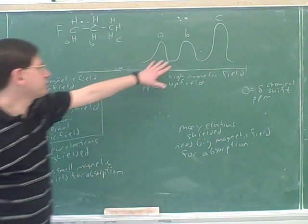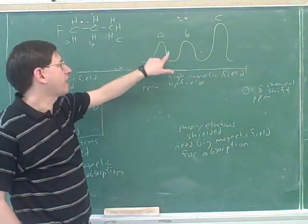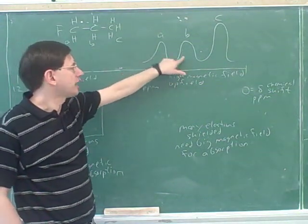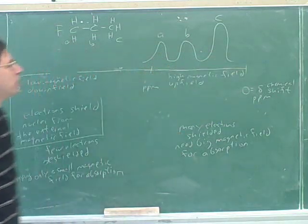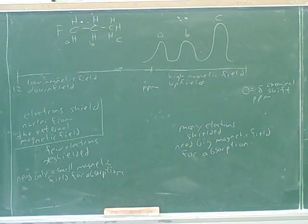By the way, why are these two peaks shorter? Well, how many hydrogens does this peak represent? Only two. And this represents three. So I'm also, roughly speaking, showing the number of hydrogens with the heights of the peaks, even though we're mainly focusing now on horizontal position.